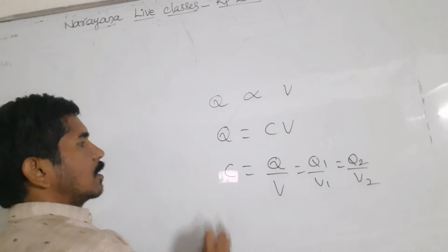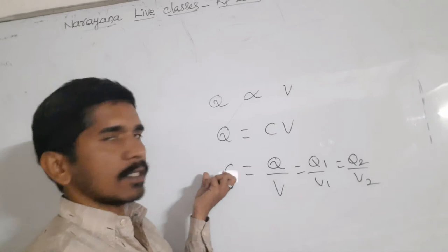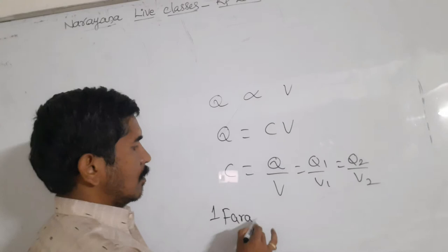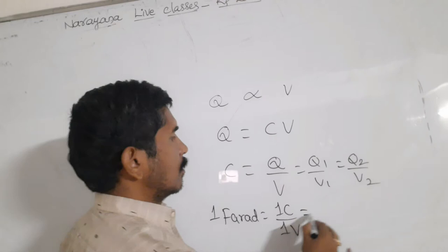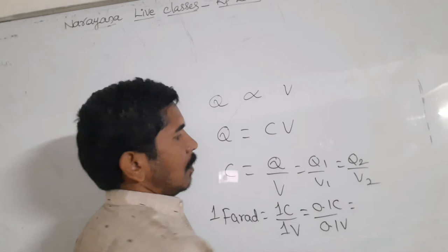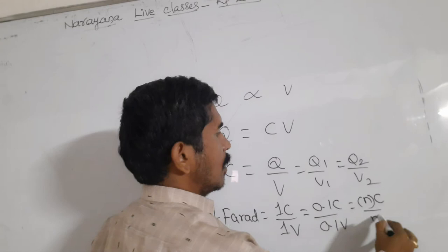The capacitor does not depend on the charge; capacitor does not depend upon the capacity of the capacitor. The unit is farad. One farad is equal to one coulomb divided by one volt, or 0.1 coulomb by 0.1 volt, or m coulombs by n volts.